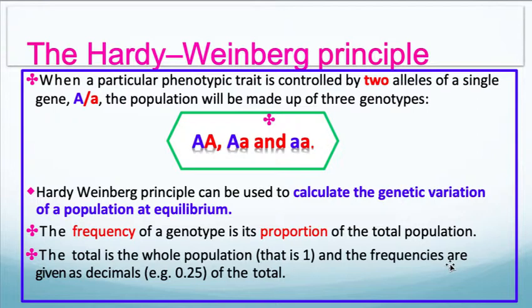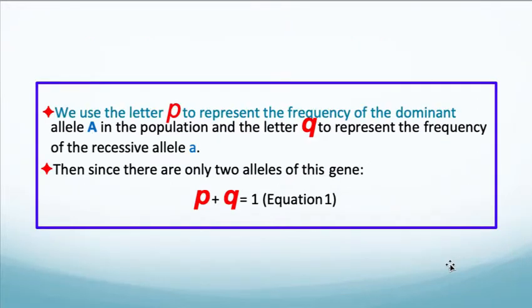The Hardy-Weinberg principle: when a particular phenotypic trait is controlled by two alleles of a single gene, a dominant and recessive form, the population will be made up of three genotypes — homozygous dominant, homozygous recessive, and heterozygous. The Hardy-Weinberg principle can be used to calculate the genetic variation of a population at equilibrium. The frequency of a genotype is its proportion to the total population — the total population is one, and the frequencies are given as decimals. We use the letter P to represent the frequency of the dominant allele, capital A, and the letter Q to represent the frequency of the recessive allele, lowercase a. Since there are only two alleles of this gene, P plus Q equals one — this is equation one of Hardy-Weinberg equilibrium.